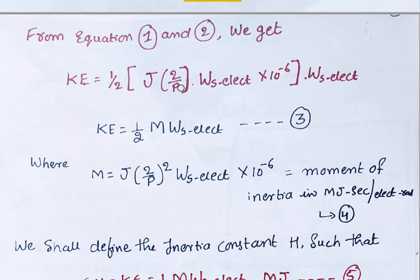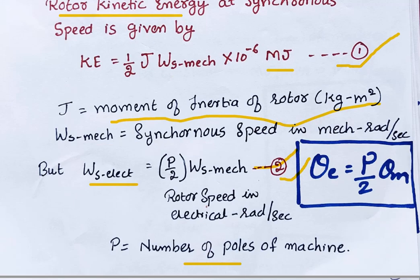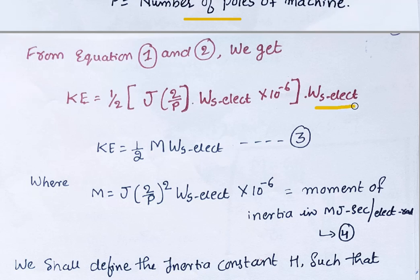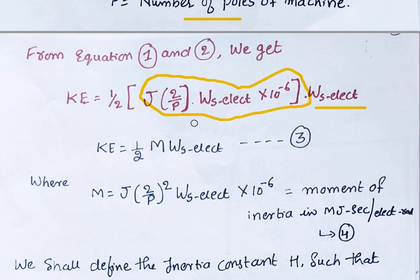Substituting, we get Ke equals J times (2/P) times omega_S electrical. We define a new term M such that Ke equals M times omega_S electrical, where M equals J times (2/P)² times omega_S electrical times 10 to the minus 6. M is the angular momentum in Mega Joules per electrical radian.